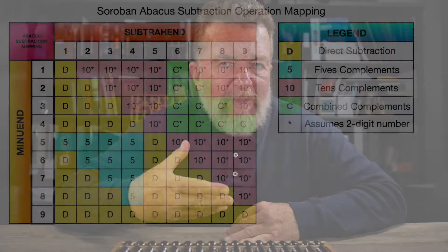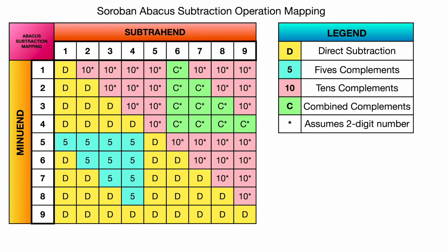Now, subtraction is like an inverse operation of addition. And just like with addition on the abacus, there are four different types of problems you might encounter. So let's review the operational mapping of how to do subtraction on the Soroban.